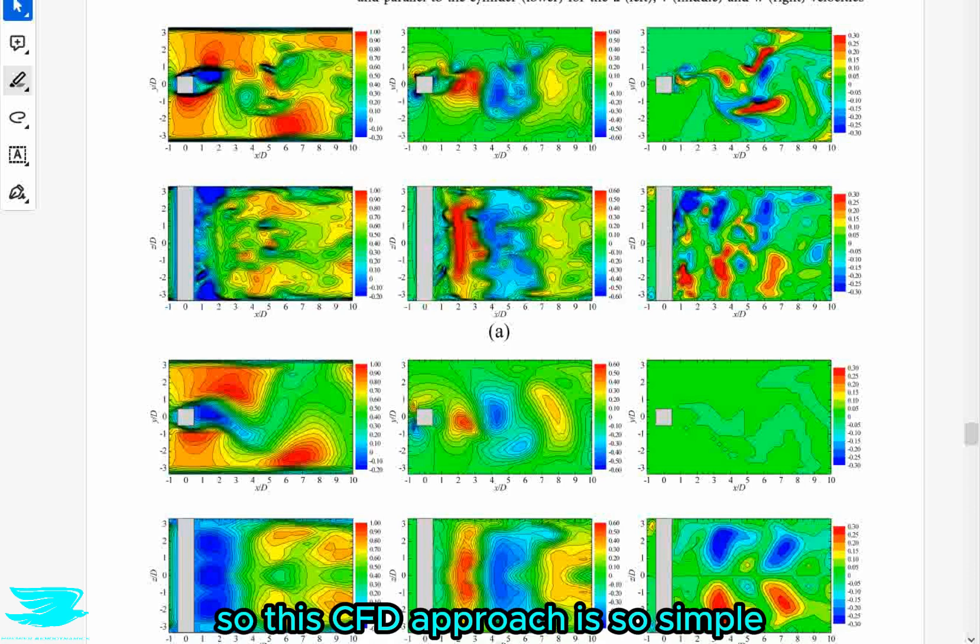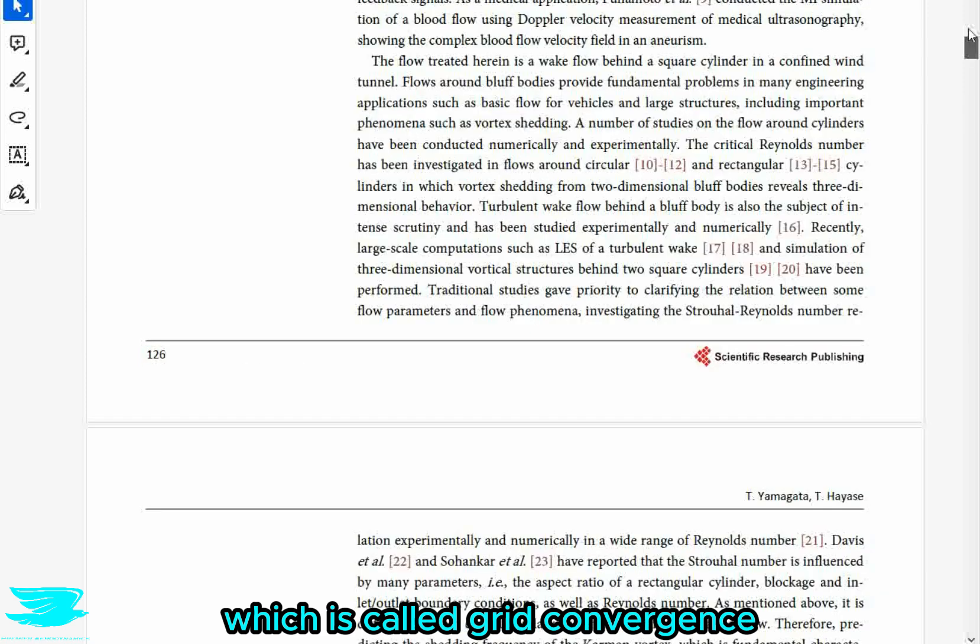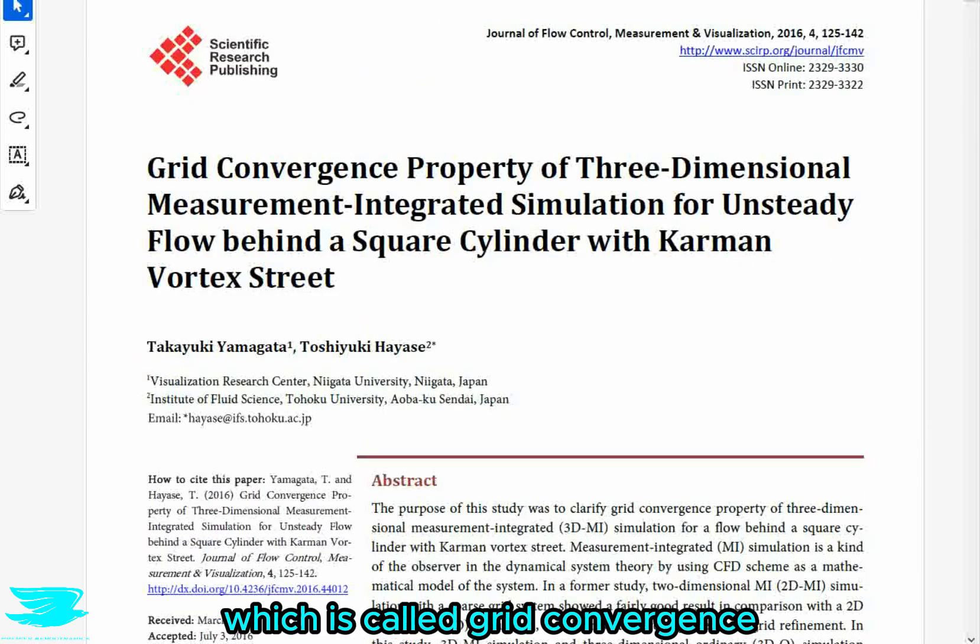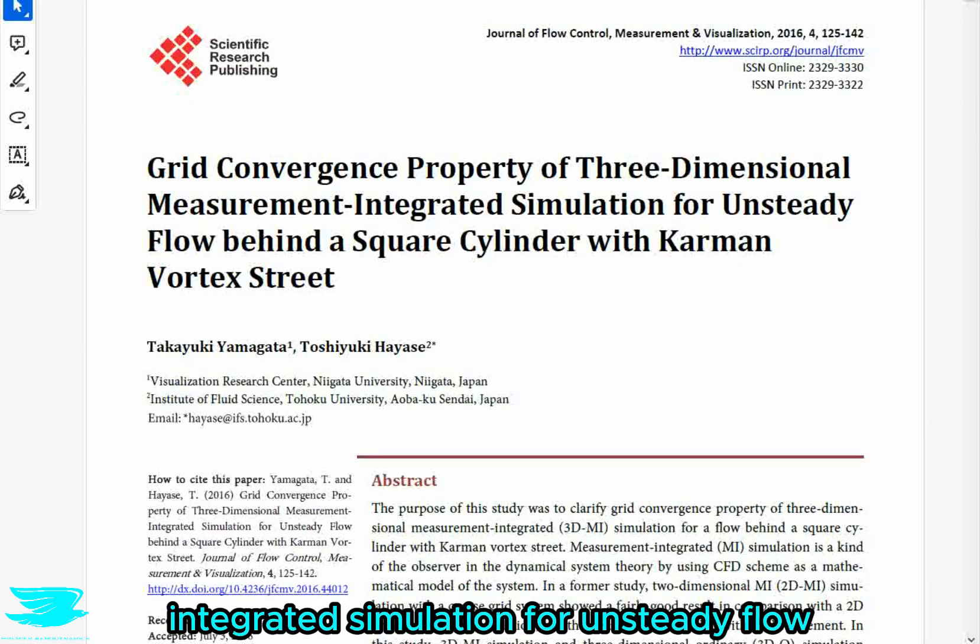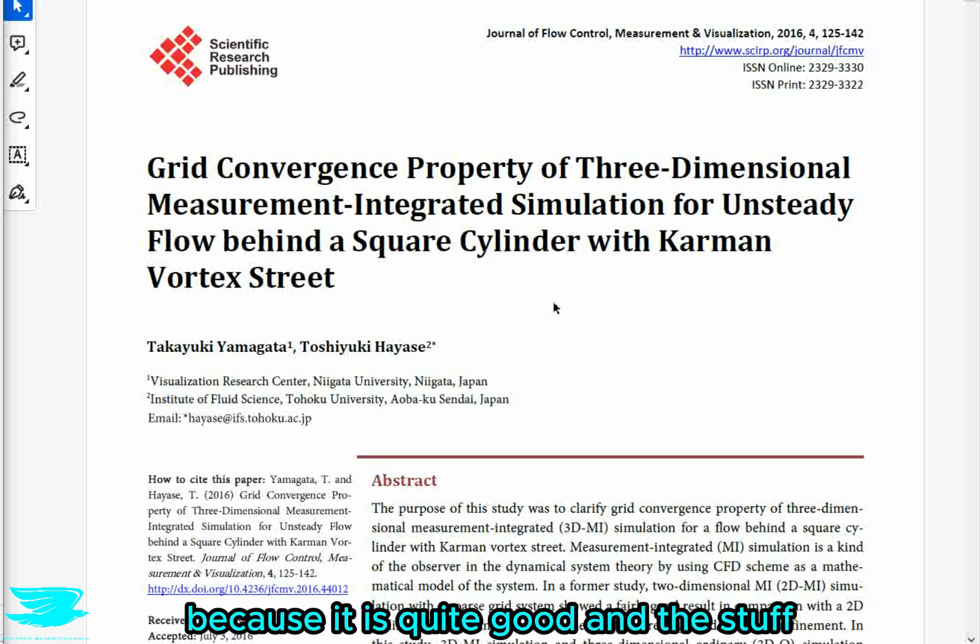So this CFD approach is so simple when you think about it, and personally, I can't believe that I haven't really thought about it before, but does it work? So to find out, we are looking at this paper, which is called Grid Convergence Property of Three-Dimensional Measurement Integrator Simulation for Unsteady Flow Behind a Square Cylinder with a Common Vortex Street. So this is open access, and you can find it in the link below.